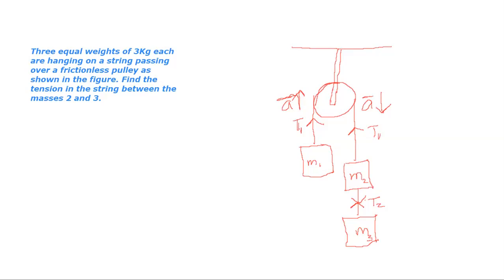We can see the figure of this problem here. Here we have three masses M1, M2, and M3 which are of equal mass, each of them has 3 kg each. We need to find the tension between M2 and M3, the tension between these two masses, that is T2.